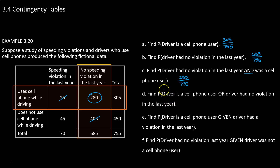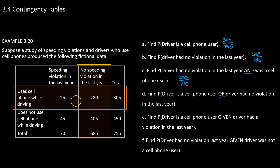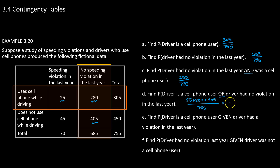What about the probability that the driver is a cell phone user OR had no violation in the last year? Now we're looking at the same row and column but saying 'or,' so we include the 25 drivers who use their phone but got a violation, the 280 that fit both characteristics, and the 405 drivers who don't use their phone and had no violation. Adding all three gives 710 out of 755.